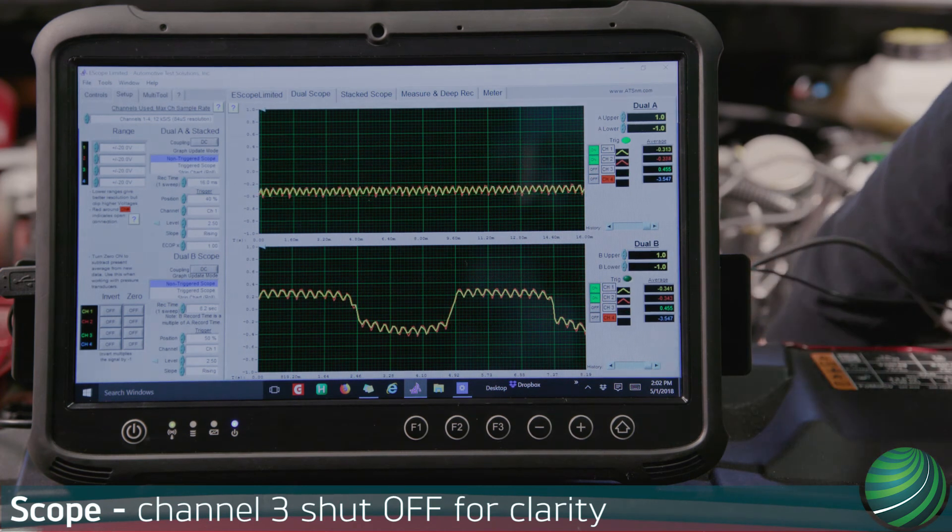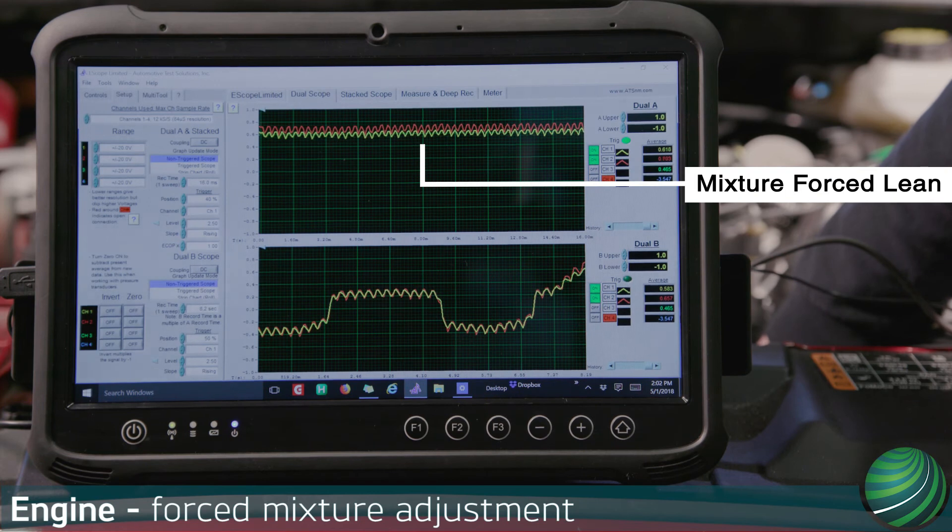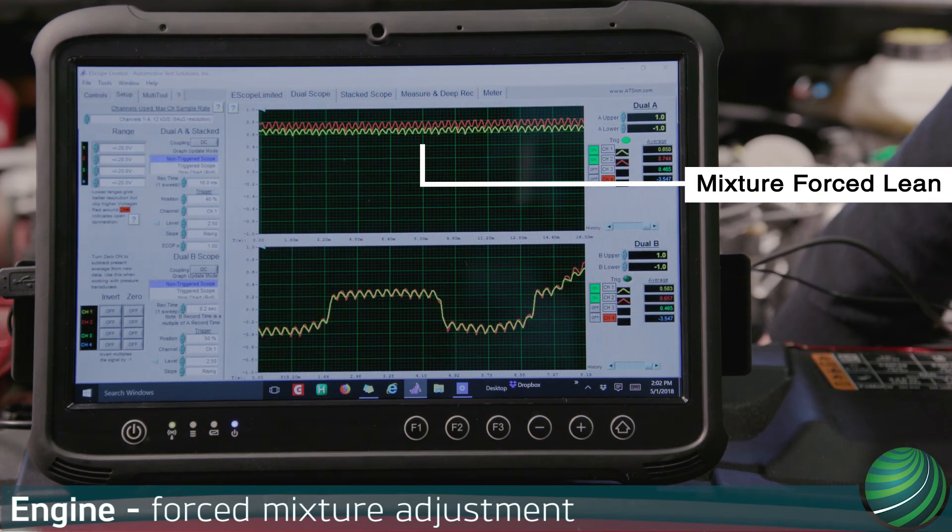Begin by forcing the sensor lean. Create a large vacuum leak. Voltage should go to and remain at positive 400 millivolts when the vacuum leak is present.